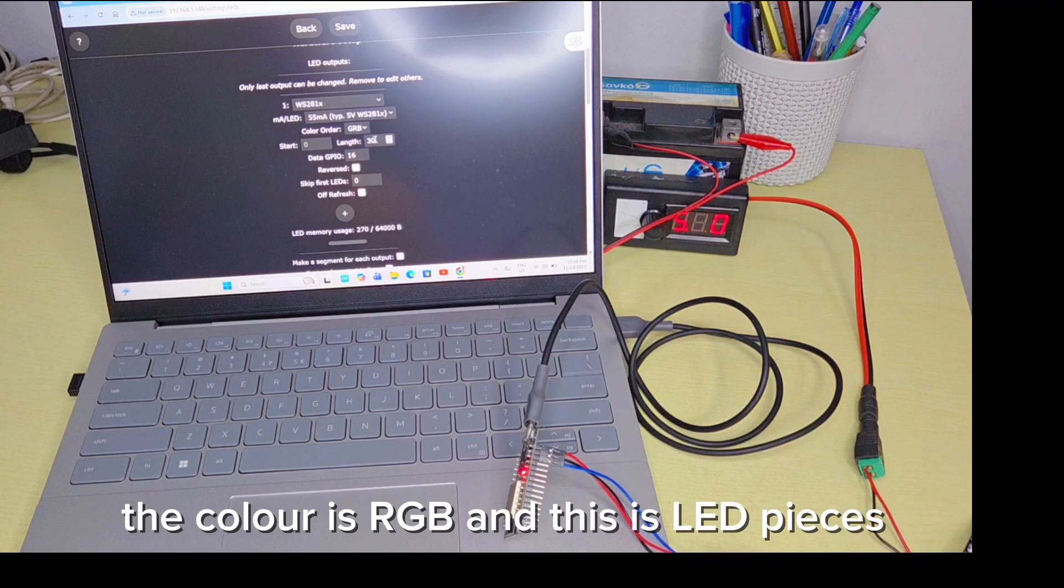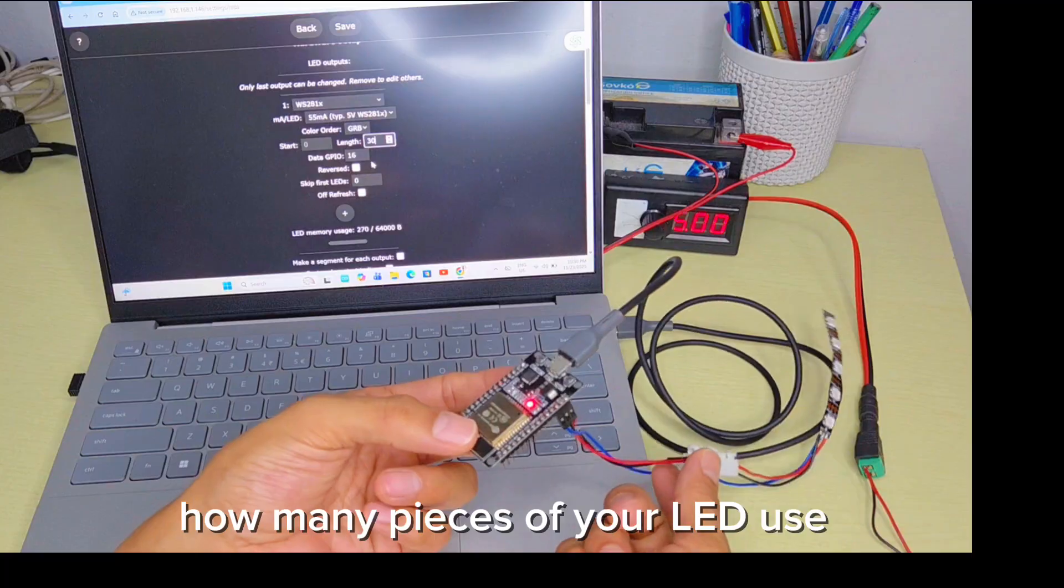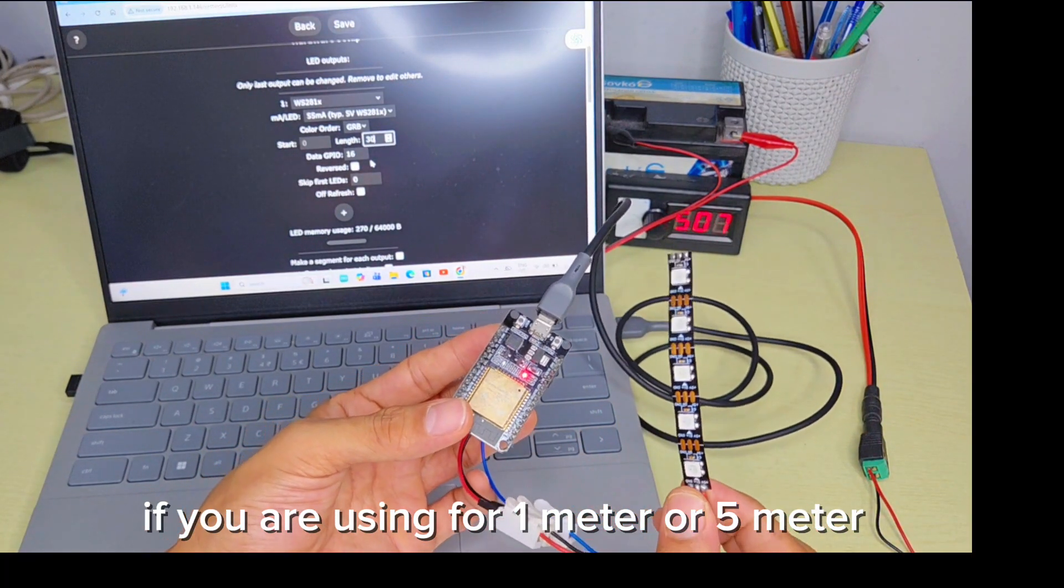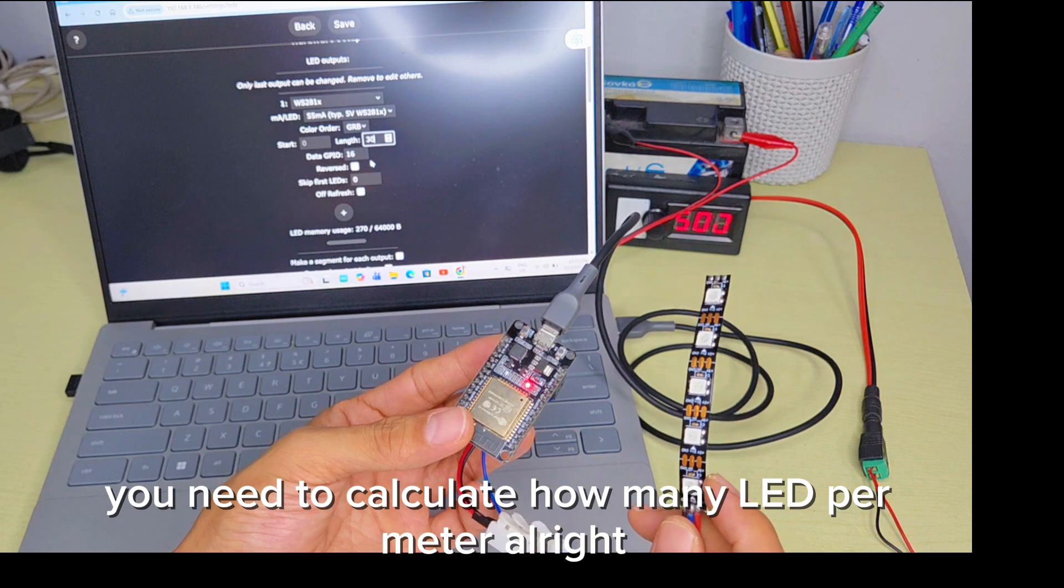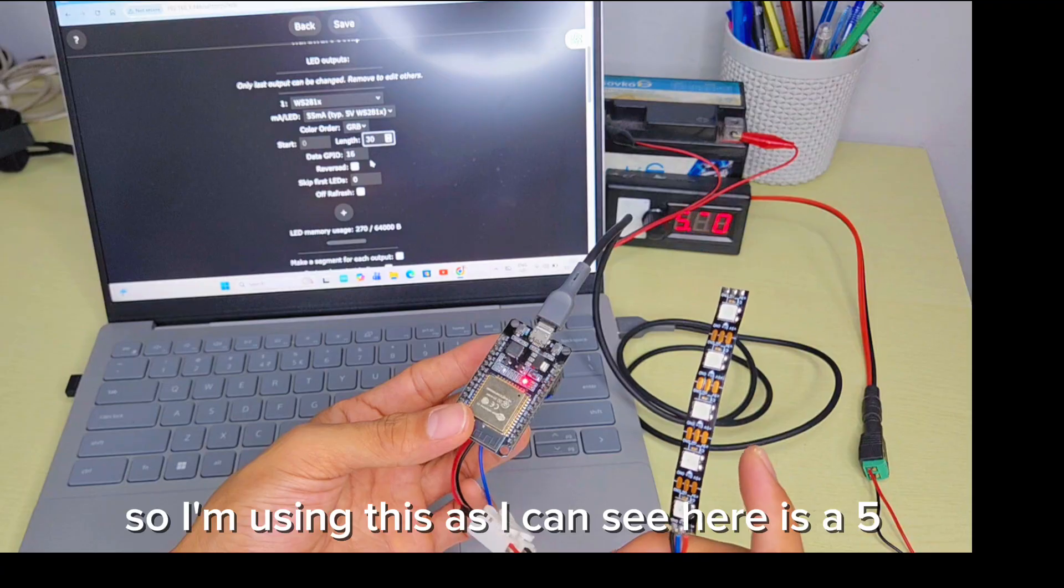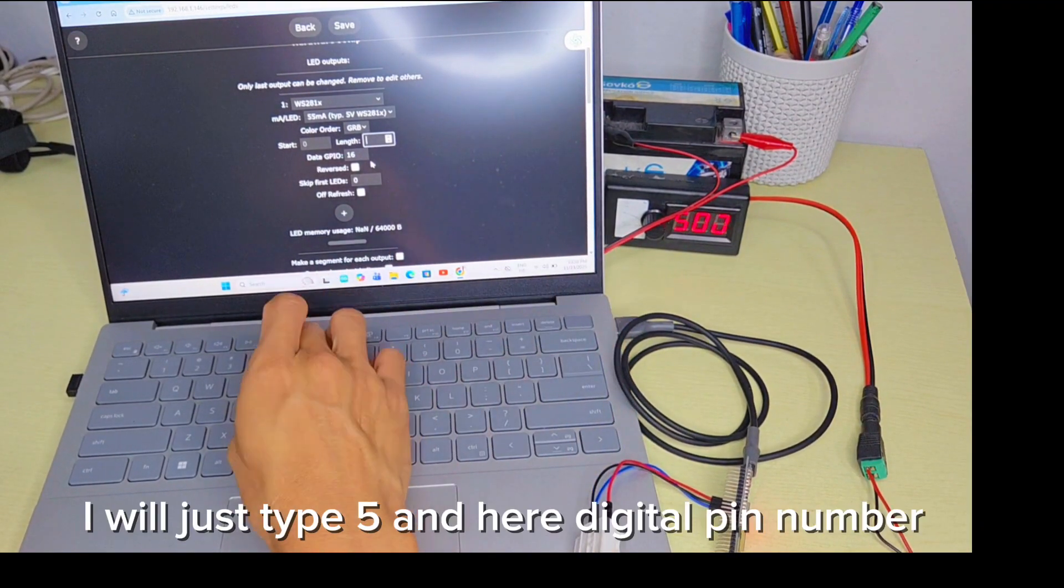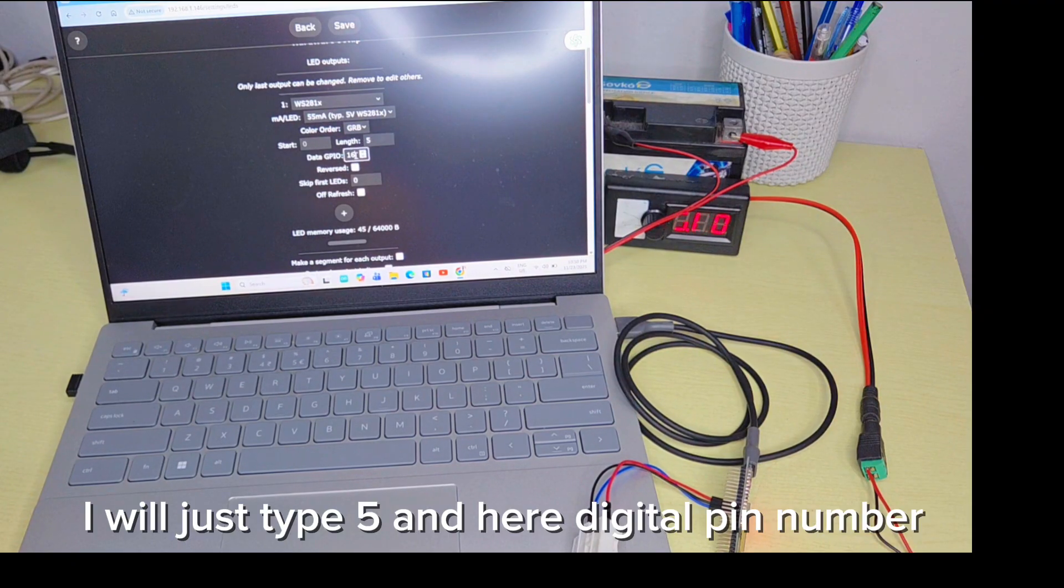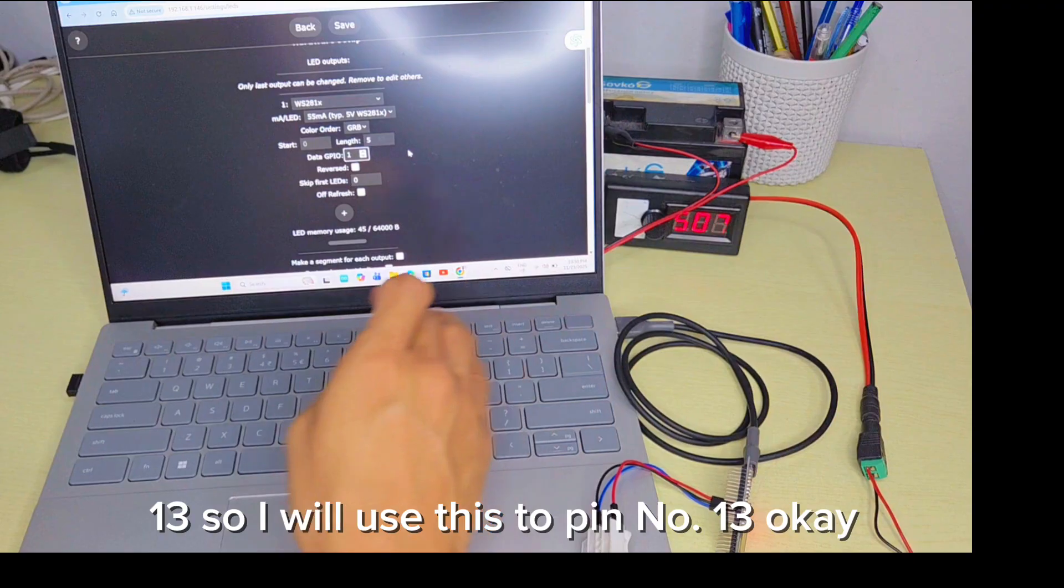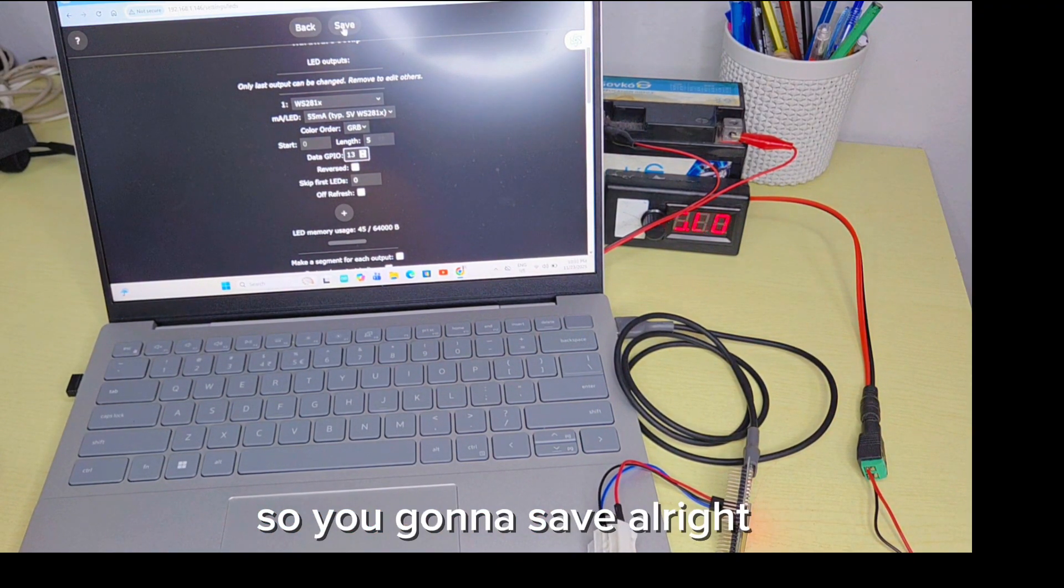The color is RGB. This is LED pieces, how many pieces of your LED you use. If you're using 1 meter or 5 meter, you need to calculate how many LED per meter. I'm using 5, so I will type 5. And digital pin number I'm using is 13. I will use digital pin number 13. Then save.